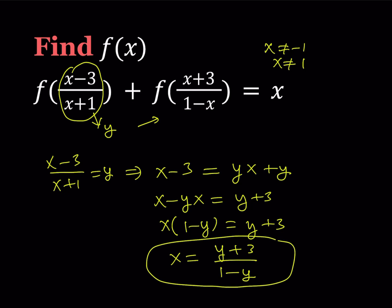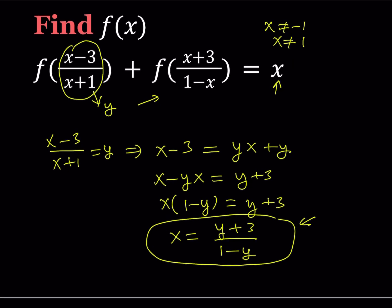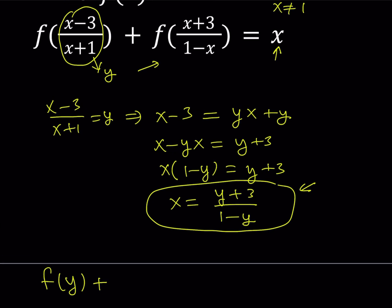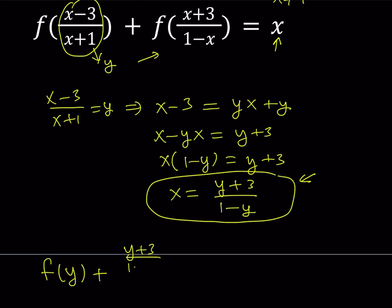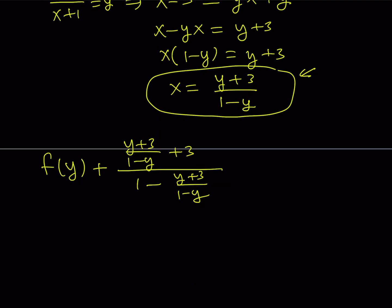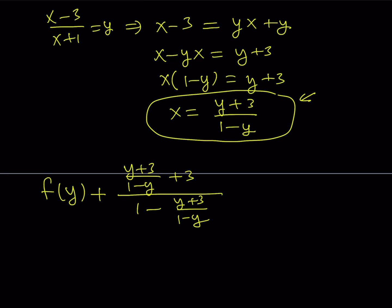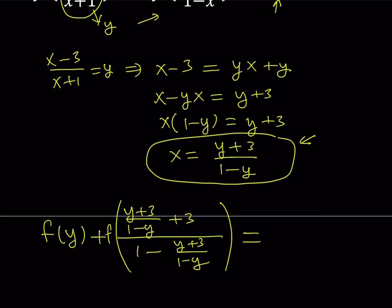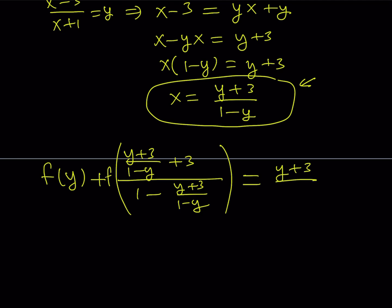This allows me to replace x with that expression, but the first one is already done — we get f of y from there. Now, in this expression, I'm supposed to replace x with (y plus 3) over (1 minus y). So I get f of y plus f of the expression: (y plus 3 over 1 minus y) plus 3, divided by (1 minus x), where x is (y plus 3) over (1 minus y). This should equal f of y plus f of this gigantic expression, equals x — and we're going to replace x with (y plus 3) over (1 minus y).